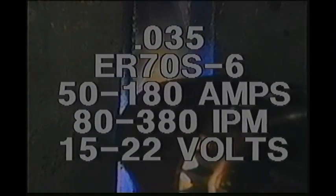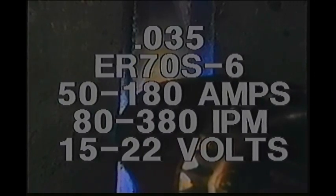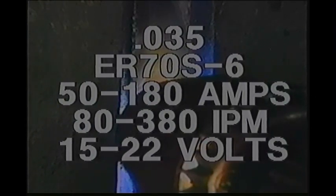A common wire diameter of .035 steel will operate best in the range of 50 to 180 amperes, 80 to 380 inches per minute of wire feed speed, and 15 to 22 load volts.